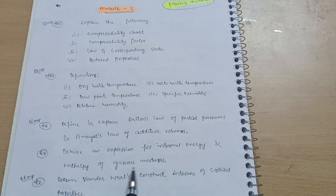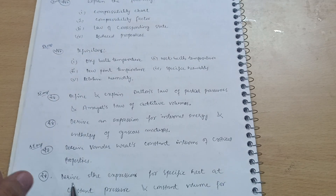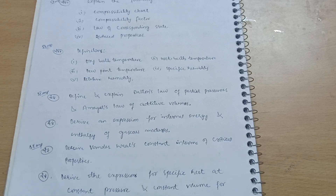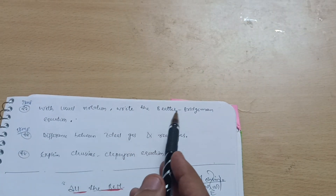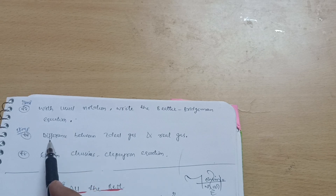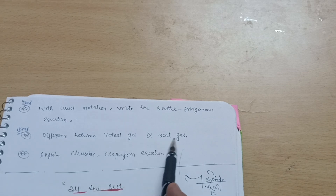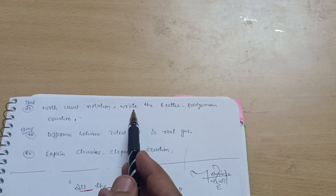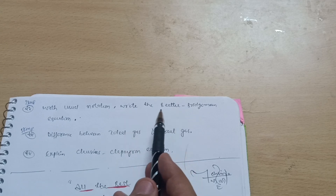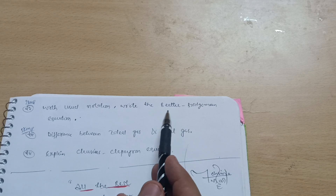Also go through this expression: derive an expression for internal energy and enthalpy of gaseous mixtures. The next possibility is: derive expressions for specific heat at constant pressure and constant volume for a mixture of gases. Next: with usual notation, write the Beattie-Bridgeman equation, the difference between ideal gas and real gas, and explain the Clausius-Clapeyron equation. This covers all the passing modules.